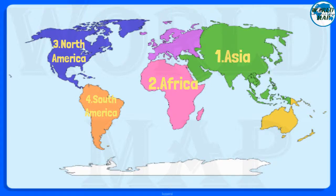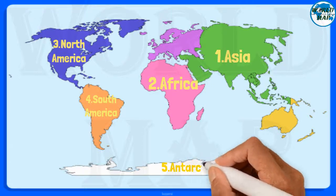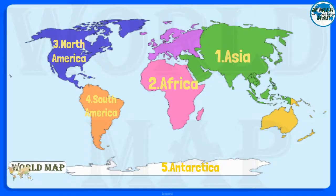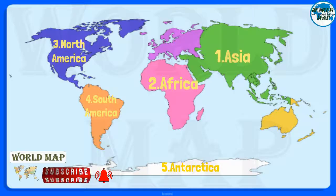Number 5: Antarctica. It is the fifth largest continent on Earth with no countries and no permanent human habitation. However, the continent has permanent human settlements where scientists and support staff live on a rotational basis.